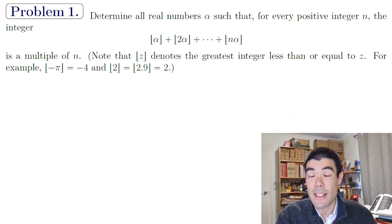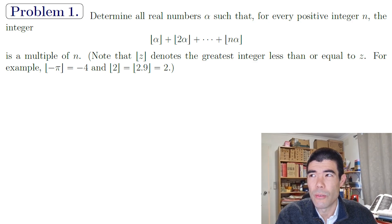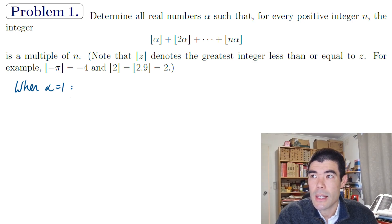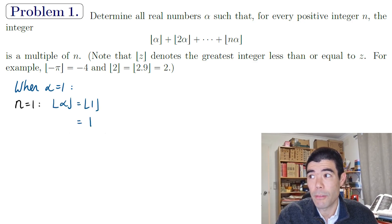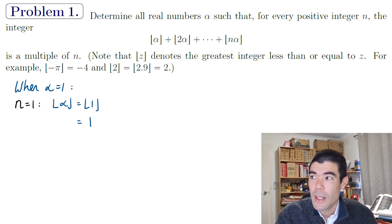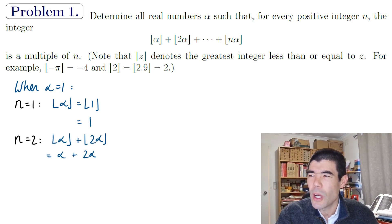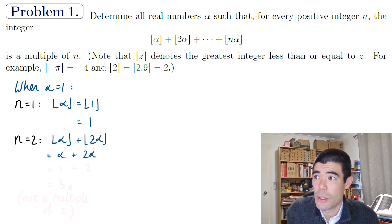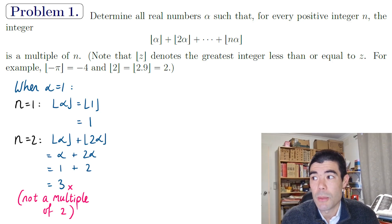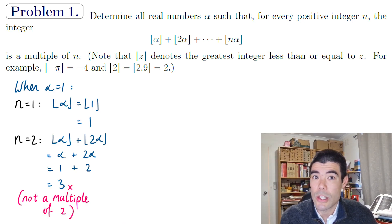Almost always the best way to get started is to substitute some numbers and see what happens. If alpha equals 1 and n equals 1, we just get floor(1) = 1, which is a multiple of 1. But when n equals 2, we get 1 + 2 = 3, and 3 is not a multiple of 2. So alpha = 1 definitely fails — it is not a solution.